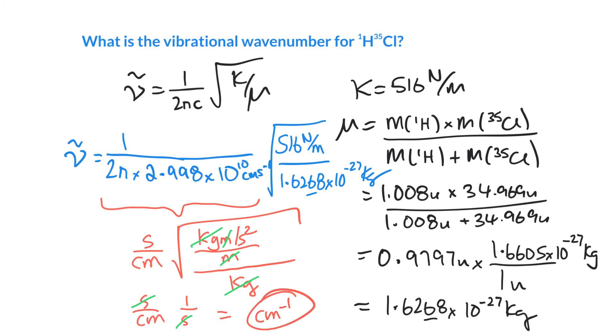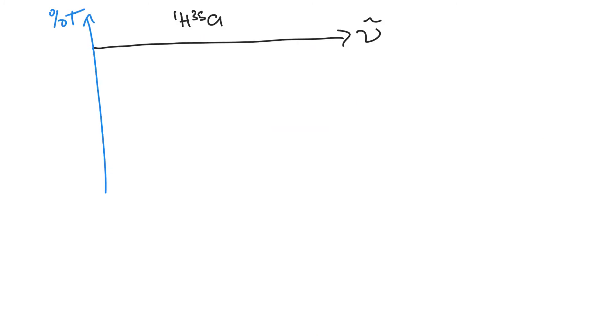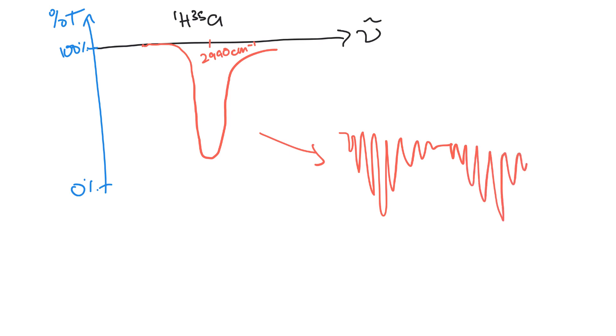If we go ahead and plug everything in, we get 2,990 centimeters to the minus 1. If we look at a low-resolution spectrum in an infrared spectrometer of HCl, what we find is we see a strong absorption, a region where we've got low percent transmittance centered right around that frequency we just calculated, about 2,990 wave numbers centimeters to the minus 1. In high-resolution work, what we'll actually see is a series of lines that look kind of interesting. If you remember our rotational work earlier, you might recognize that we've got these lines, those cones or cone-like structures with constant spacing. We'll see that this comes from the fact that not only does the molecule vibrate, it also rotates and we can see rotational information in our spectrum too.